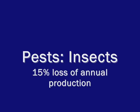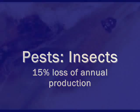Cotton insects are the principal cause of yield losses. Estimates indicate that the yield losses due to insect infections would amount to almost 15% of the world annual production.